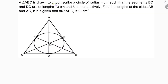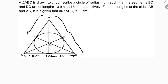A triangle ABC is drawn to circumscribe a circle of radius 4 centimeters such that the segments BD and DC are of length 10 centimeters and 8 centimeters respectively. Find the length of the sides AB and AC. It is given that the area of triangle ABC is 90 centimeters square.